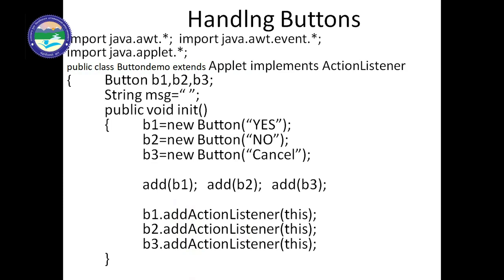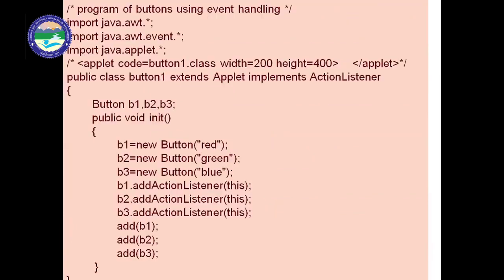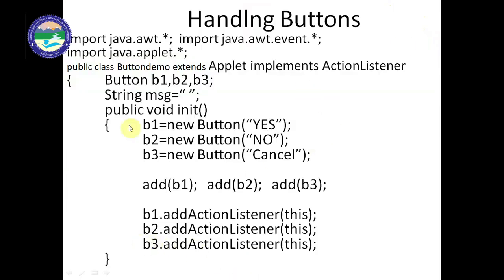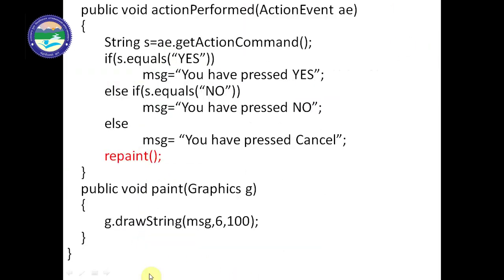This is the init function. Now we require one more function: 'public void actionPerformed(ActionEvent ae)'. As in the previous program, the first function in the Button1 class is the init function and the second function is 'public void actionPerformed(ActionEvent ae)'. So same way in this program we must mention 'public void actionPerformed(ActionEvent ae)'. Inside it, we write: 'String s = ae.getActionCommand()'.